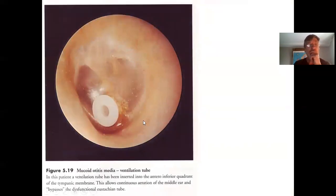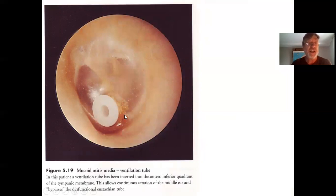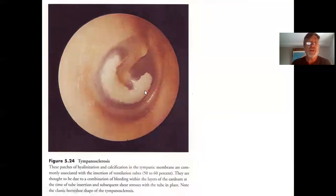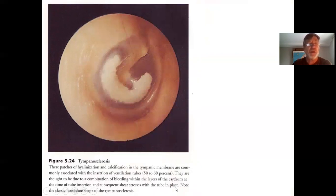A tube can be inserted in the eardrum to bypass the dysfunctional Eustachian tube. The tube eventually grows out on its own. Tympanosclerosis is a scarred eardrum with a classic horseshoe shape, commonly associated with ventilation tube insertion. It's thought to result from bleeding within the layers of the eardrum at the time of tube insertion and subsequent shear stresses.